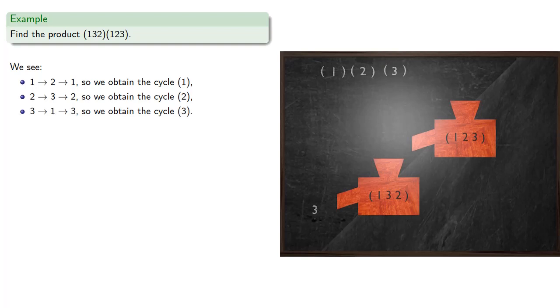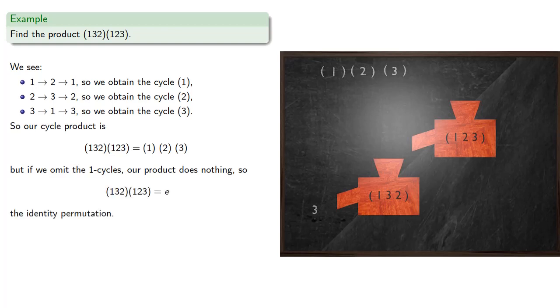And so this cycle product, (1,3,2) by (1,2,3), is actually a product of 3 1-cycles, (1), (2), and (3). But if we omit the 1-cycles, our product does nothing. Well, we don't want to leave a blank space. But remember, the do-nothing permutation is the identity, and so we can write our product as (1,3,2) by (1,2,3) is E, the identity permutation.